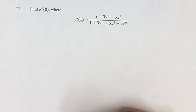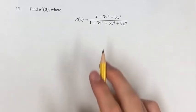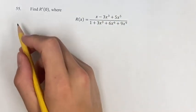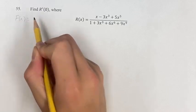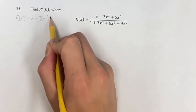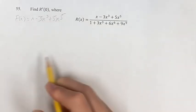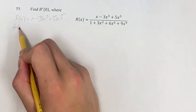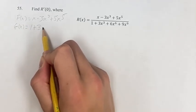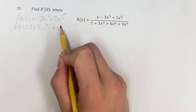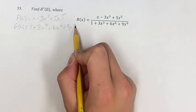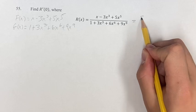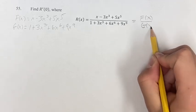Now, the recommended method for solving this problem is setting the numerator equal to f of x and the denominator to g of x, and then simplifying R of x to f of x over g of x.